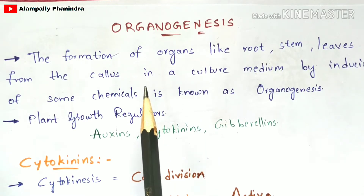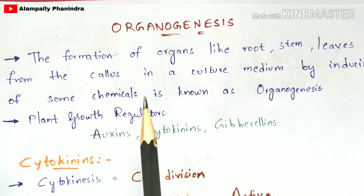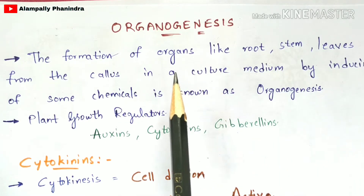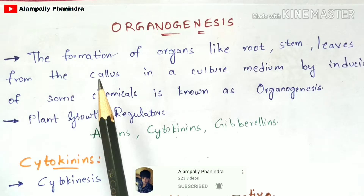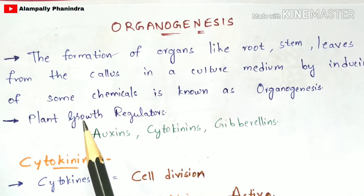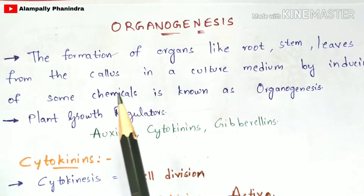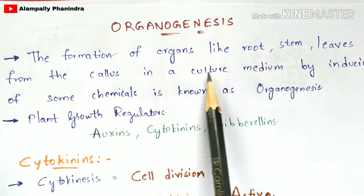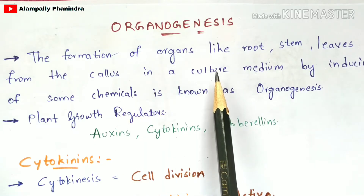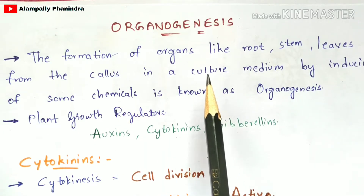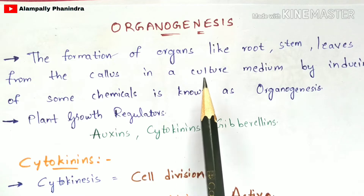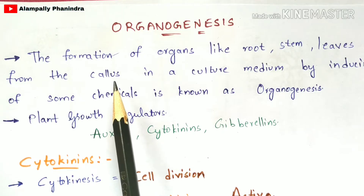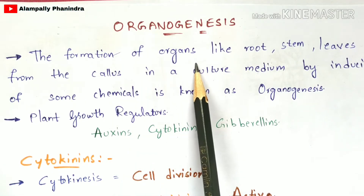The organs present in plants include root, stem, leaves, fruits, and flowers — all of these are classified as organs. The formation or development of organs like root, stem, and leaves occurs from the callus. Callus is a mass of cells derived from a normal explant. When an explant is placed in a culture medium containing amino acids, vitamins, plant growth hormones, and nitrogenous compounds, it gets nutrition and develops into callus, from which organs form.